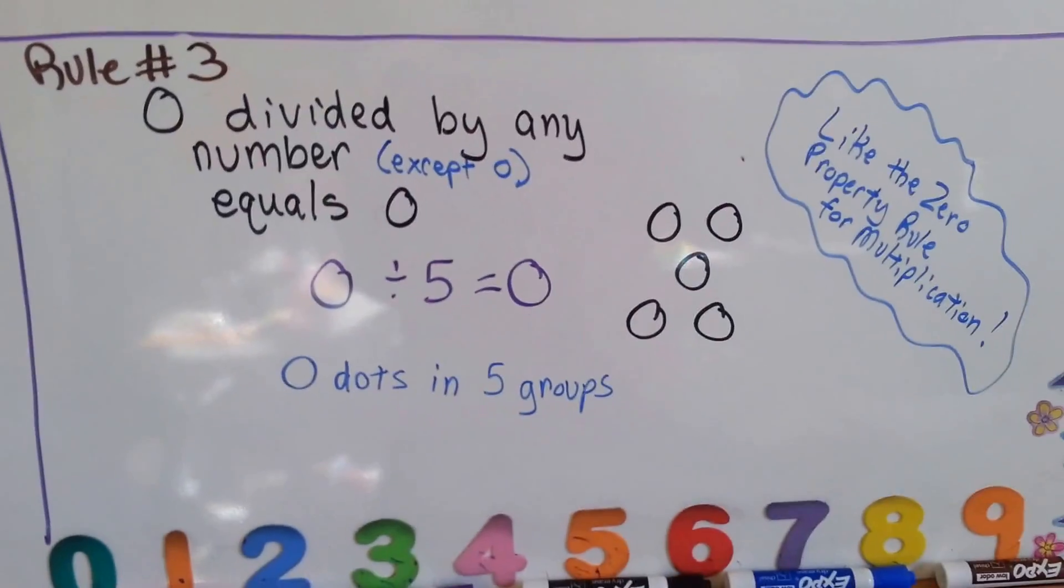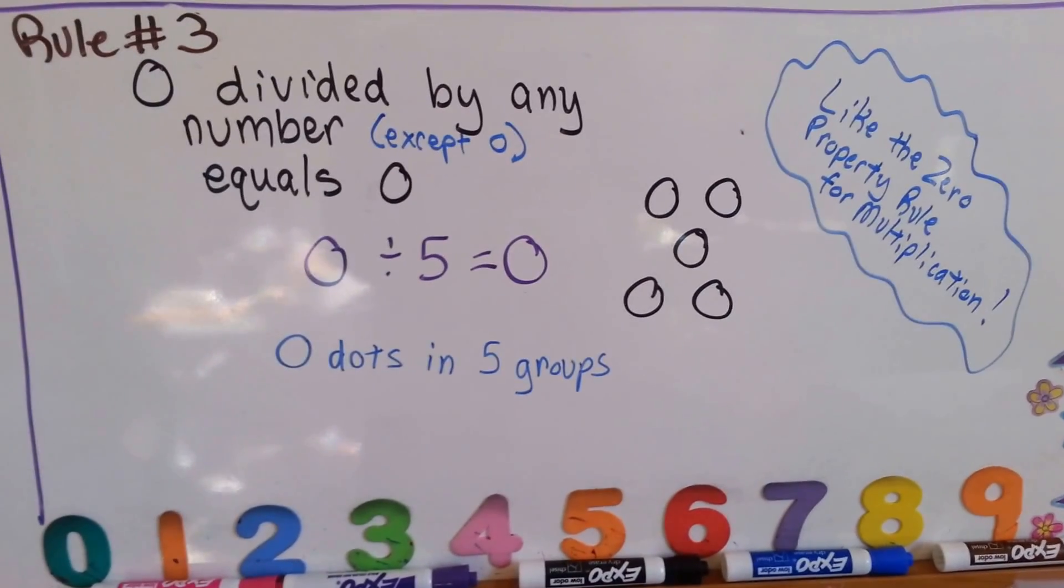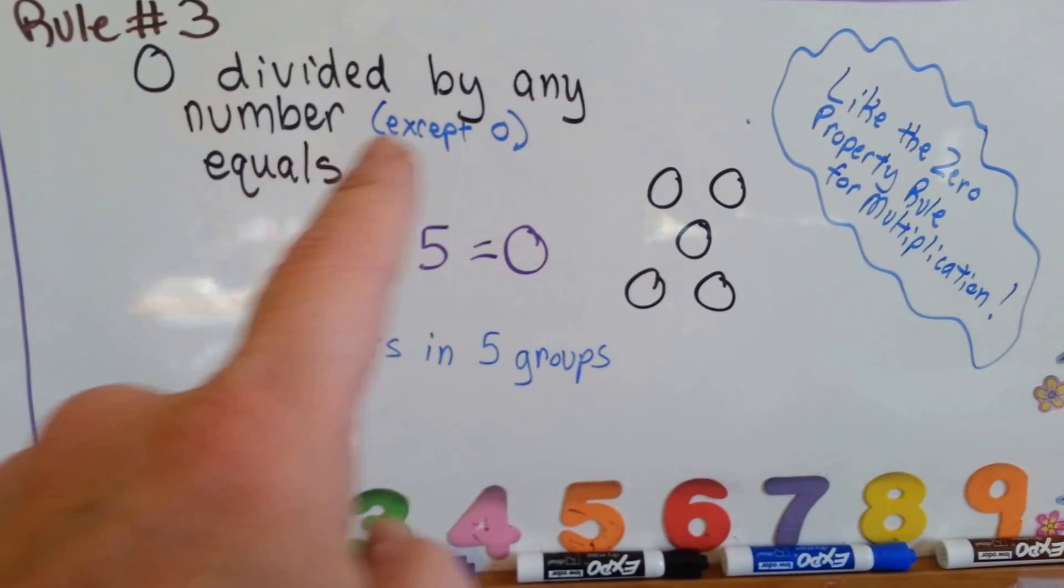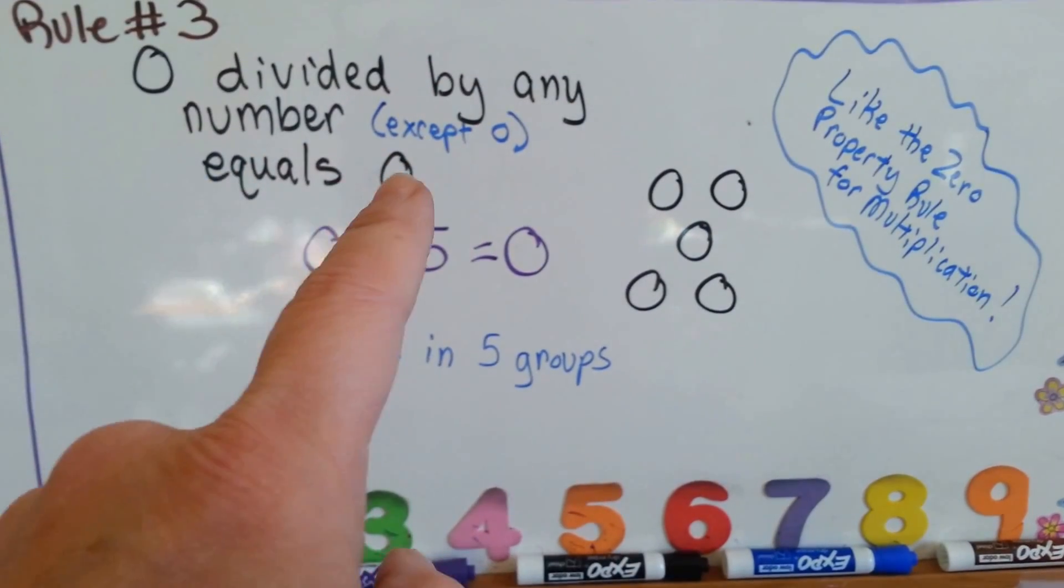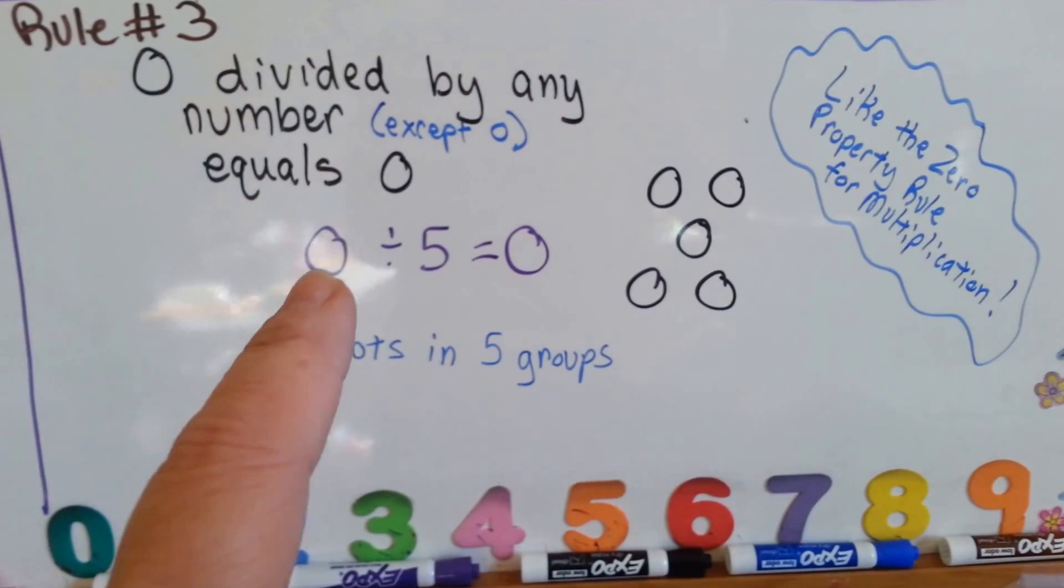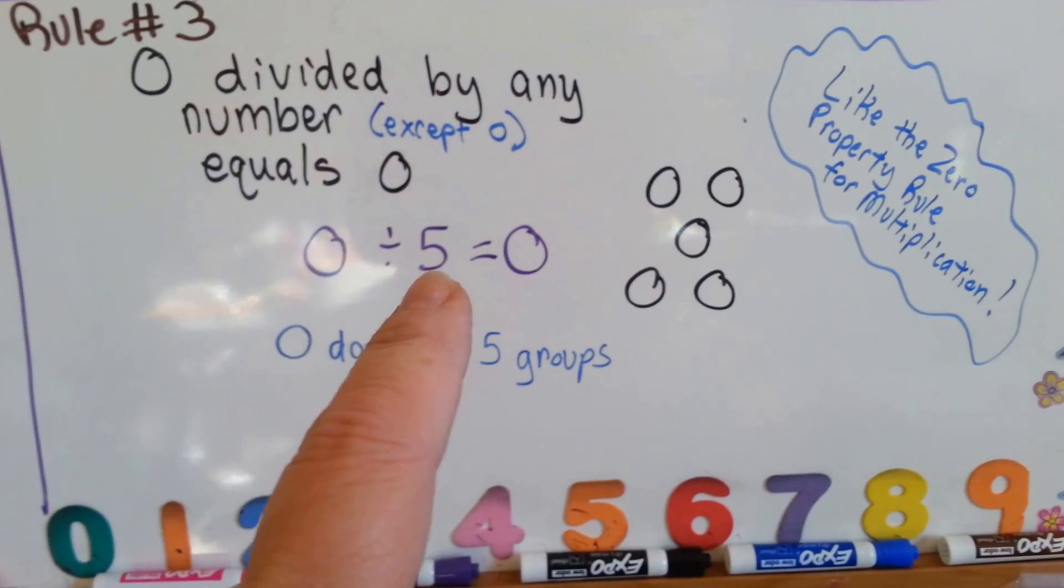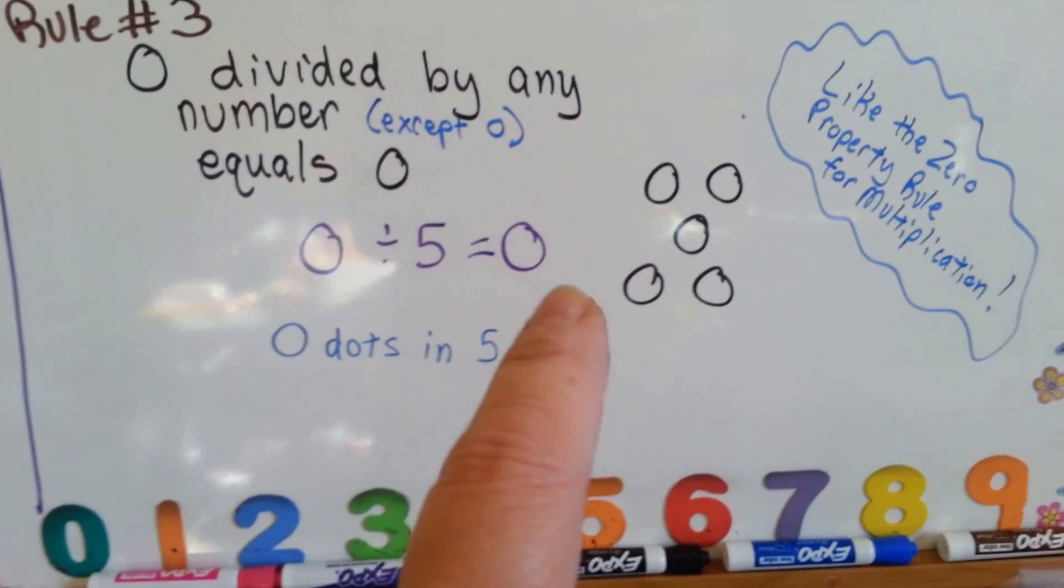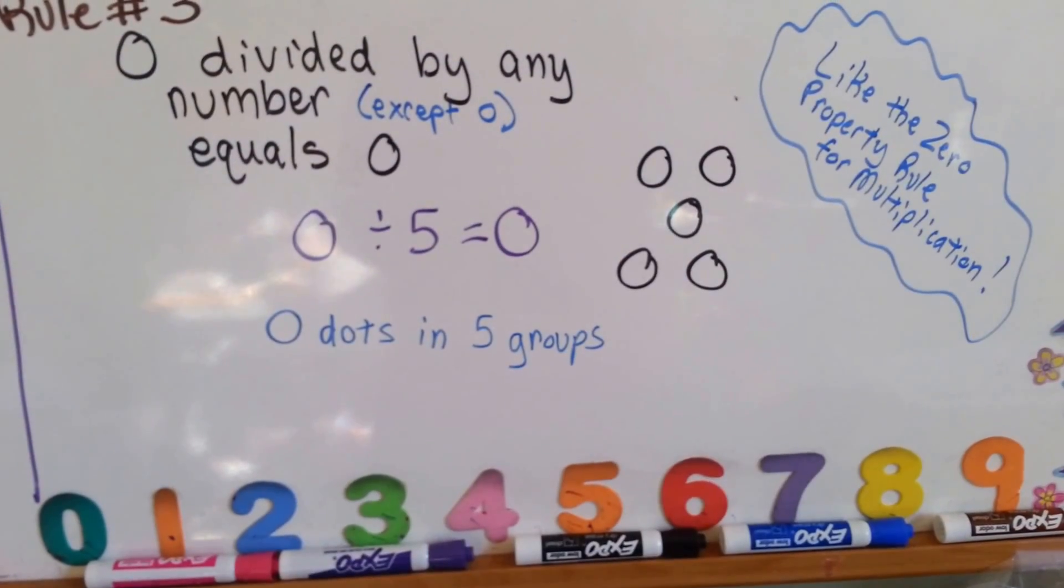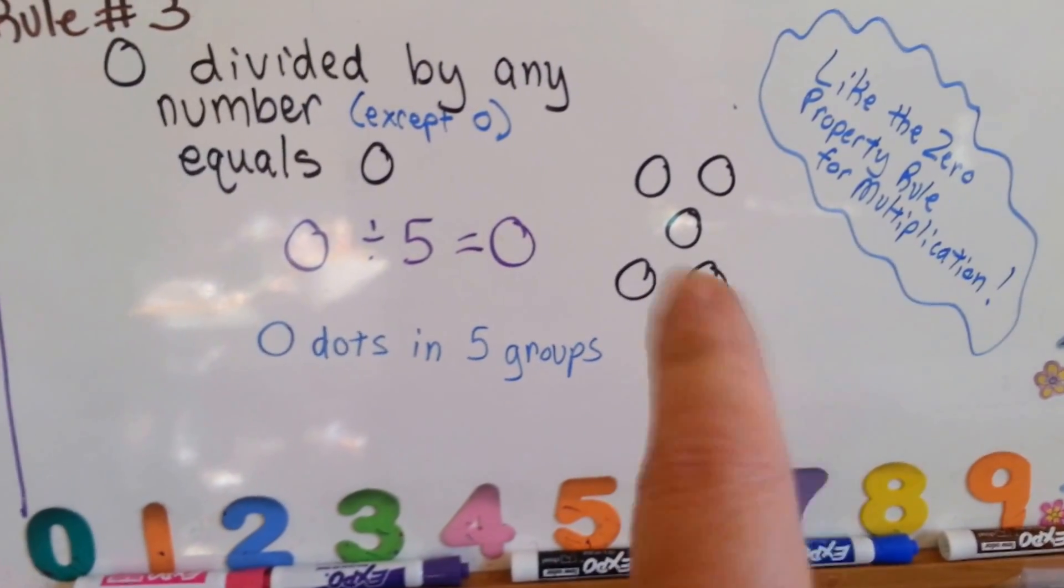Rule number 3 is like the 0 property for multiplication. 0 divided by any number except 0 equals 0. So 0 divided by any number equals 0. You have 0 dots in 5 groups. So you have 0 in the groups. See we have 5 groups of 0, and there's 0 dots in them.